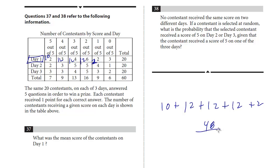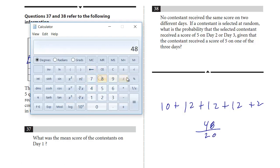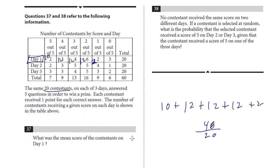Then we divide by the number of contestants, the same 20 contestants. They tell us 20, or you could just add these up. But I would use the value they give us and use your calculator. So it's 48 divided by 20. The average on day one is 2.4.